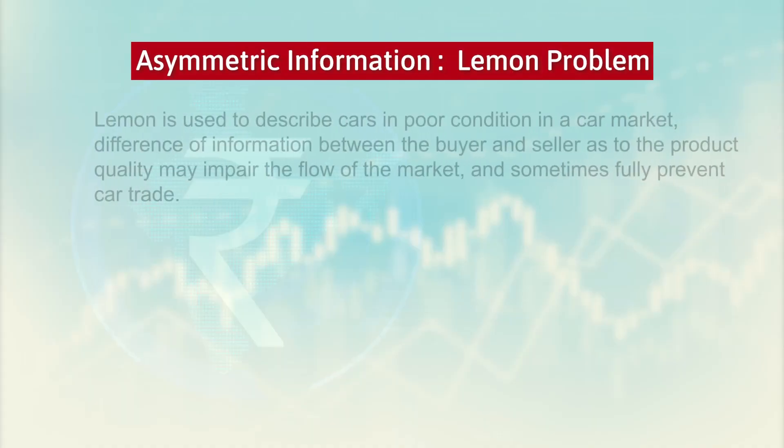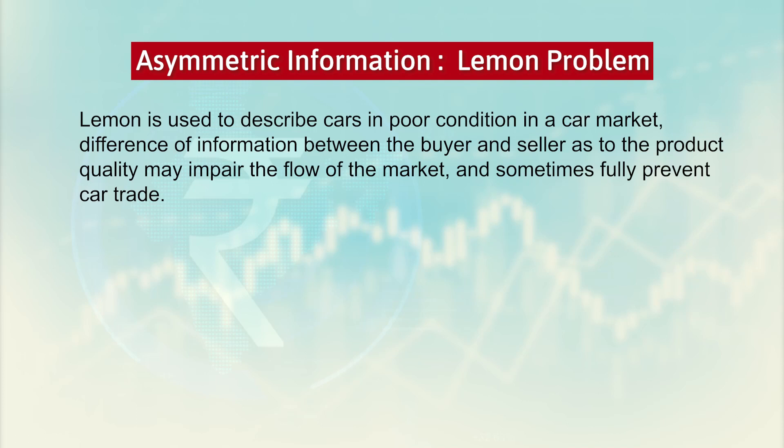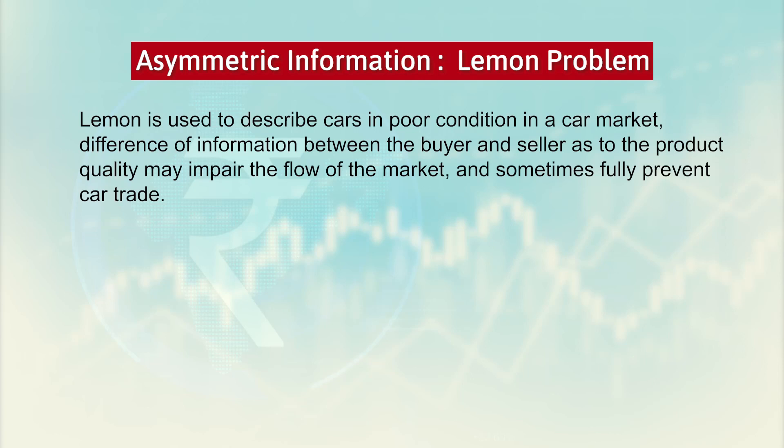We come up with some problems of asymmetric information. The first problem is referred to as the lemon problem. Here the lemon is basically used to describe the cars in a poor condition in a car market. Whenever we go for the resale or the sale of second-hand cars, in this particular market the seller is more informed than the buyer — about the running condition, mileage, capacity of the engine, and other parts — while the buyer always has less information. This difference of information between the buyer and the seller basically affects the product quality, which may not imply that perfect pricing can be done.